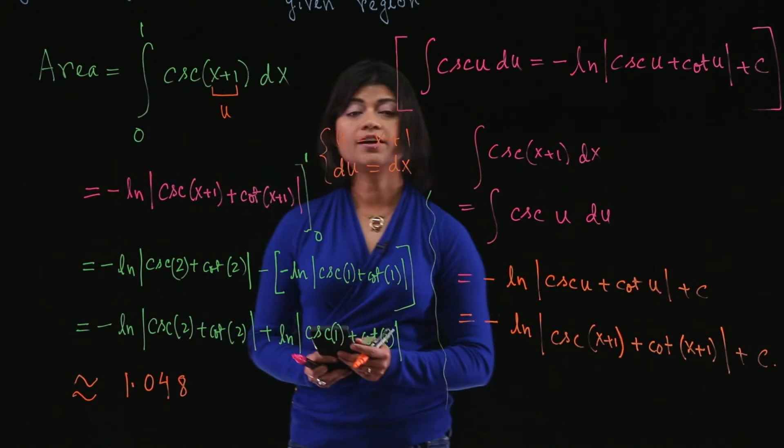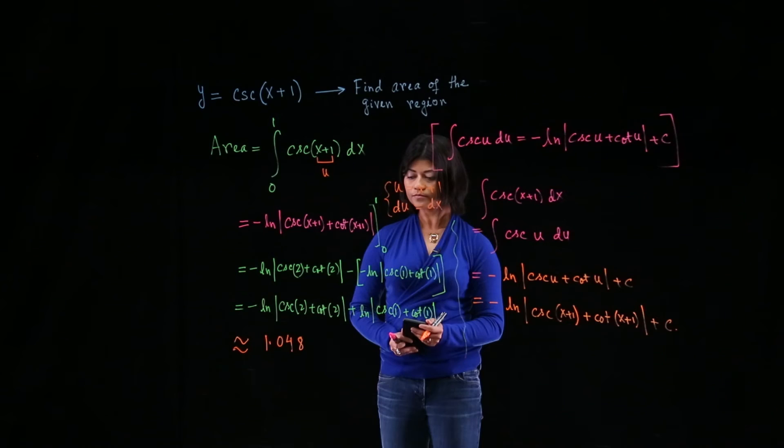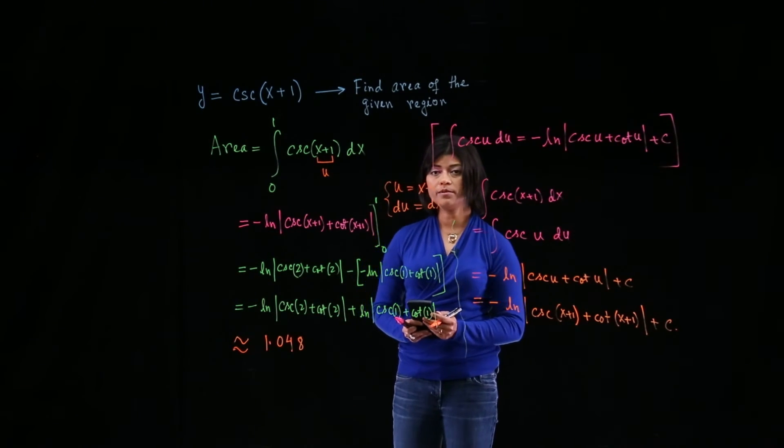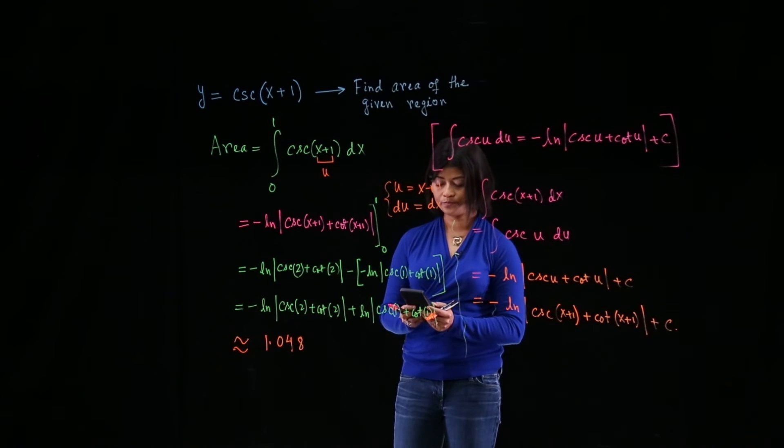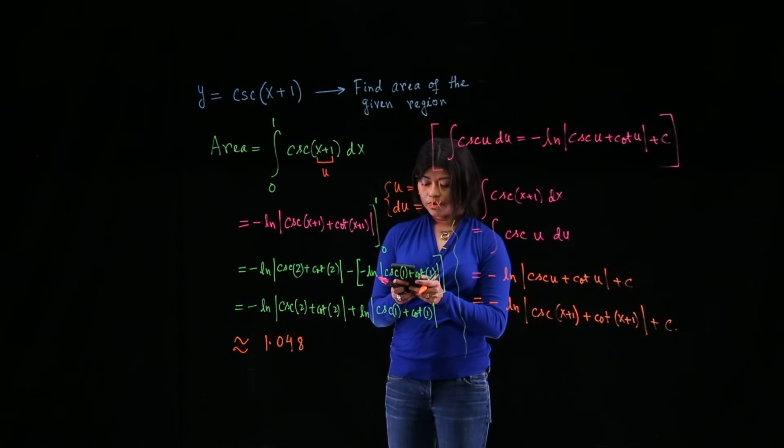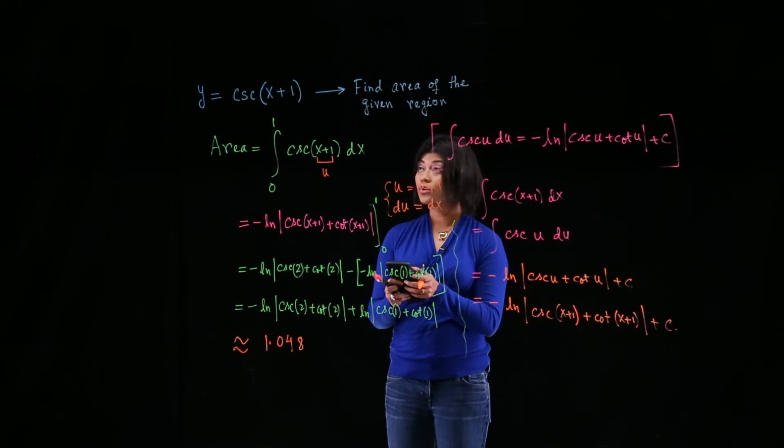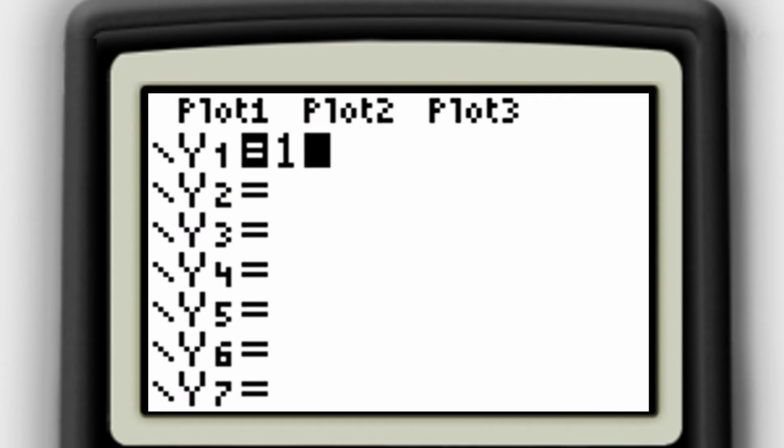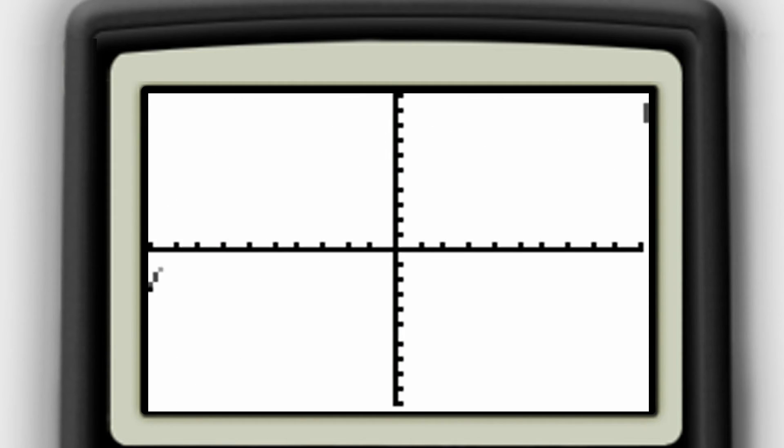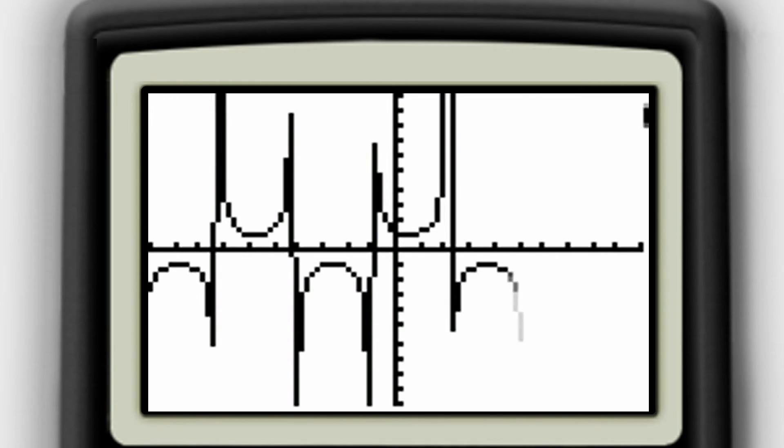So that completes the first part of the problem. To finish the problem, we have to use a graphing utility to check our answer. So you can graph this function, cosecant of x plus 1. So write down y equals 1 over sine of x plus 1. Well, you already see the graph, but you can just plug it in.